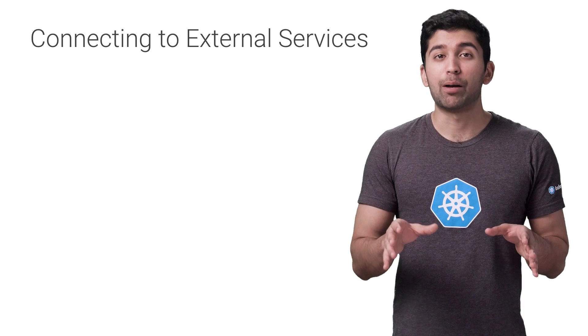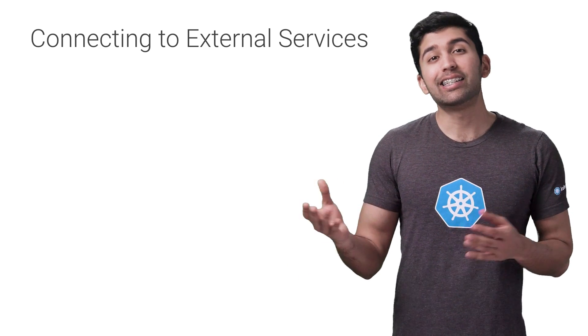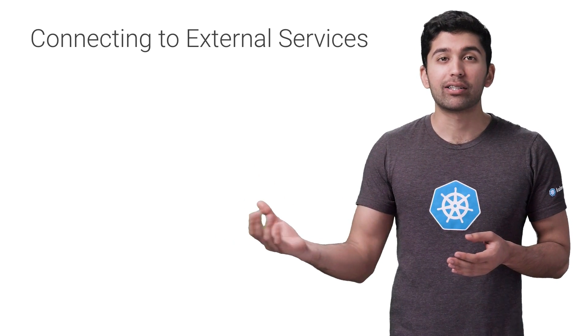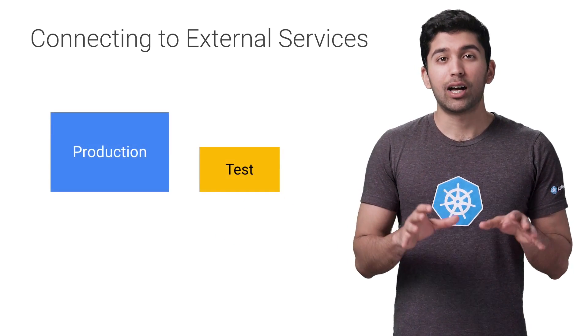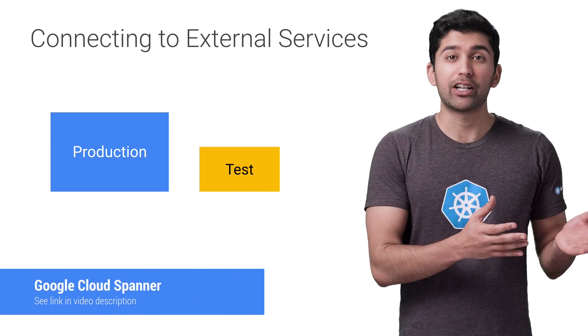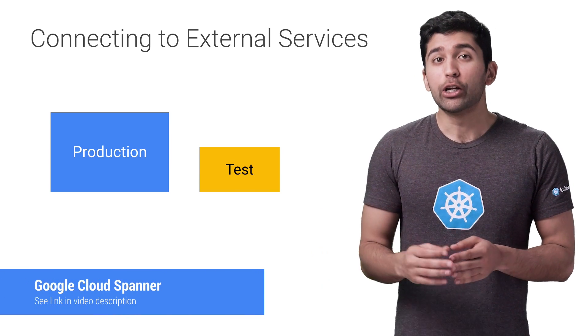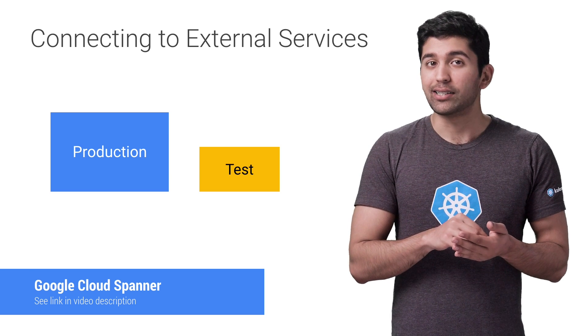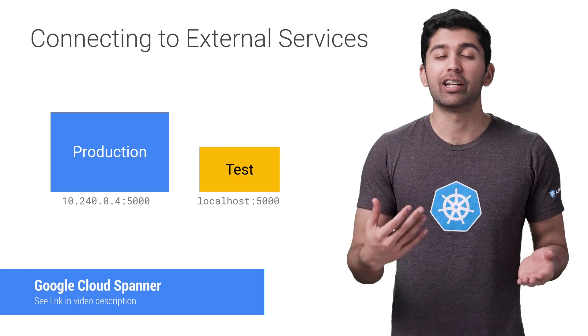One common service that's a good example of an external service is a database running outside of your Kubernetes cluster. While some cloud-native databases, such as Google Cloud Datastore or Google Cloud Spanner, use a single endpoint for all access, most databases have separate endpoints for different instances. Best practices for traditional databases like MySQL and MongoDB usually prescribe that you connect to different instances for different environments, so you might have a big machine for production data and a little one for the test environment.